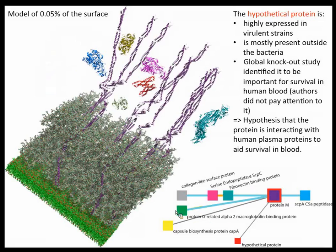You can build a more explicit structural mock-up — though we haven't done full minimization yet due to compute limitations. This mock-up represents the interaction or association network. The hypothetical protein turned out to be very interesting: it is highly expressed in virulent strains, mostly found on the outside of the bacteria in the secreted pool, and in a transposon study knocking out non-essential genes, this protein was important for survival in blood — whereas hypothetical proteins are typically grossly overlooked.